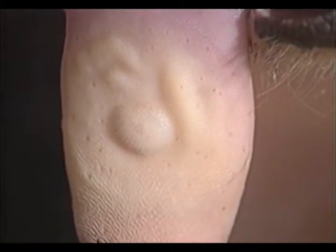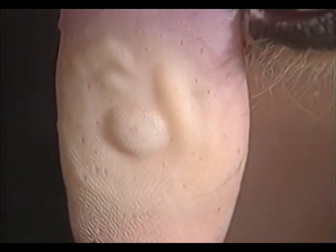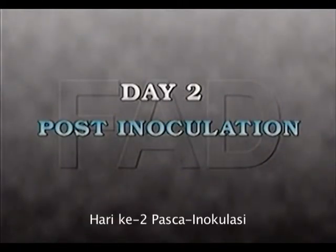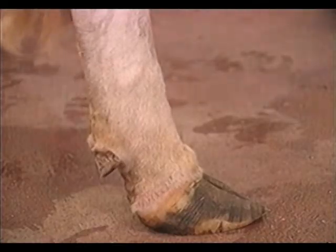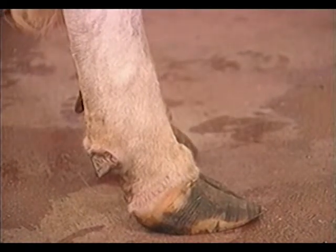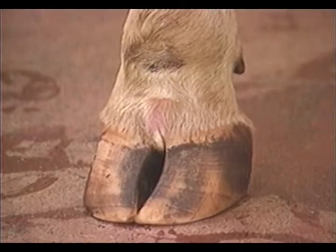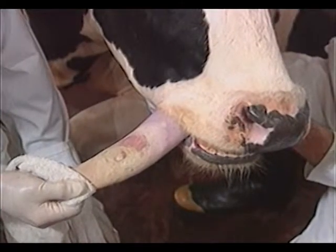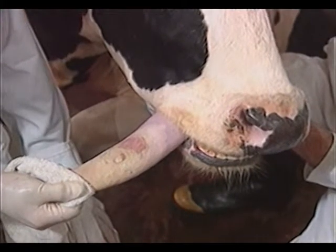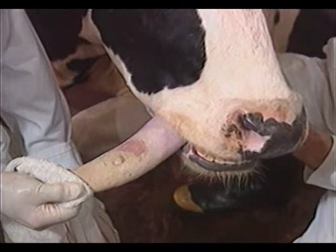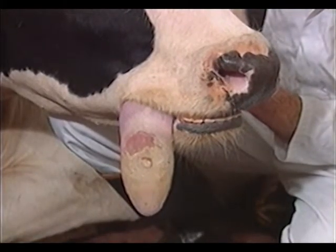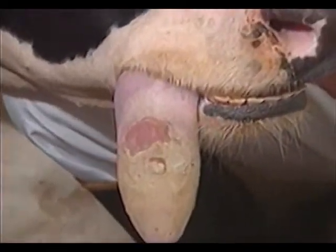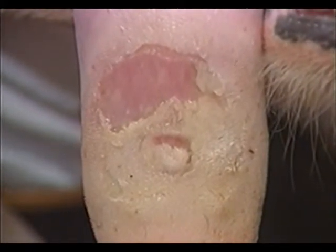Gambar jarak dekat titik inokulasi ini menunjukkan pembengkakan dengan cairan pada bagian kanan dan atas. Hewan terlihat berliur dan mengisap lidah. Gerakan menendang dan menggeser beban tubuh jelas mengindikasikan ngilu pada kaki. Kulit yang terlihat putih merupakan lepuh pada selat racak. Daerah lepuh pada lidah telah pecah. Perhatikan bahwa ada wilayah putih dekat epitel yang pecah. Daerah epitel yang pecah ini merupakan erosi karena hanya lapisan-lapisan atas epitel yang terpengaruh. Lapisan basalnya masih utuh, sehingga bila tidak ada infeksi sekunder, lesi akan segera sembuh.